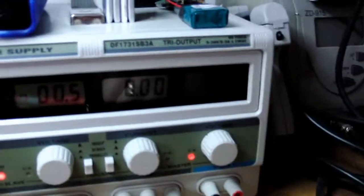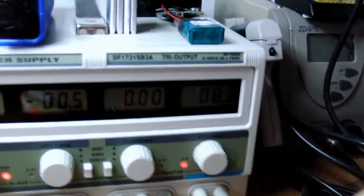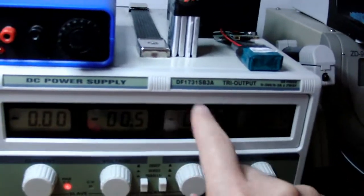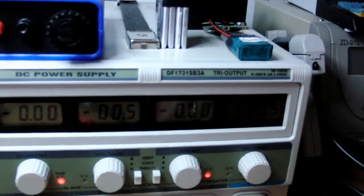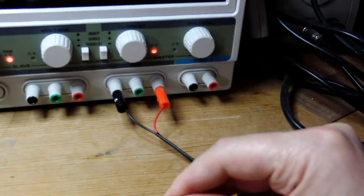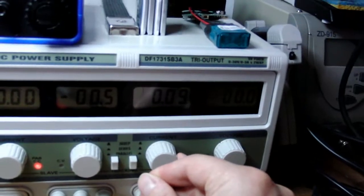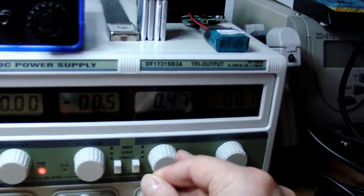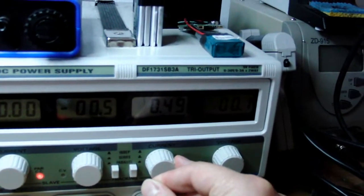The second thing you want to do is limit the charging current. I'll dial down my current limit to zero and I short the two terminals out. And then I turn up the current to my maximum charge current.